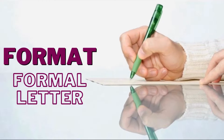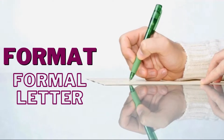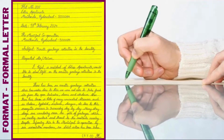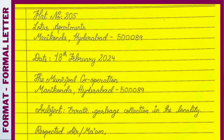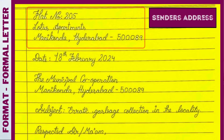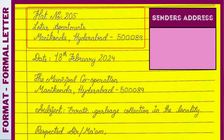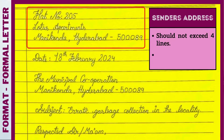The format of a formal letter begins with the sender's address. The sender's address should not exceed four lines. In the sender's address, each line should not end with a comma.